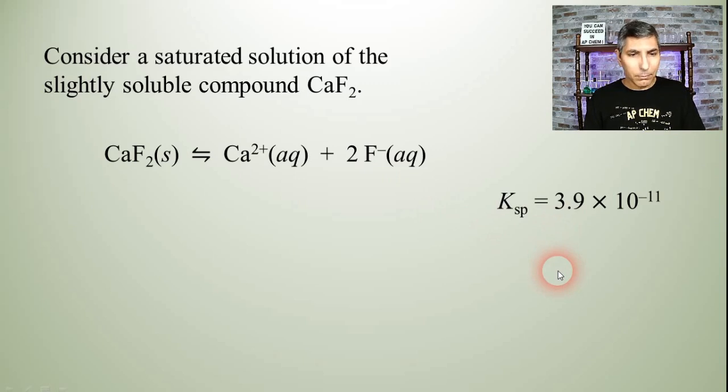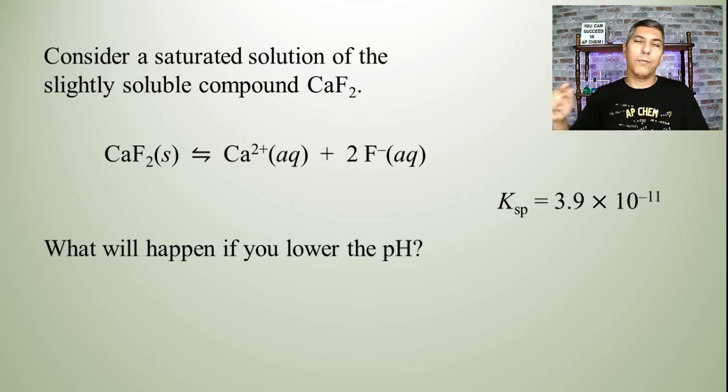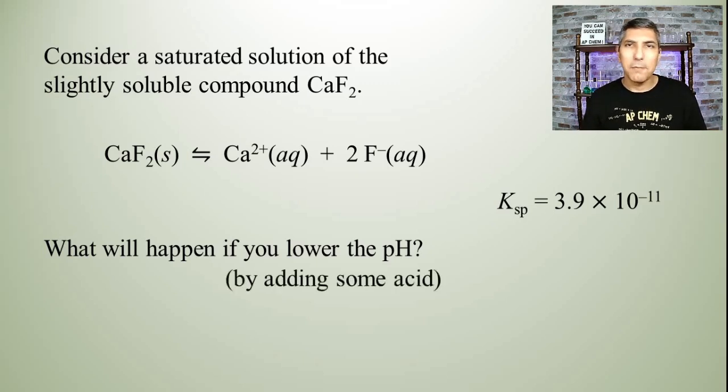Now, this time, we're going to take a saturated solution of this calcium fluoride. And this time, we're going to lower the pH. Once again, I'm going to ask you the same question. How do we go about doing that? How do we lower the pH of something? Well, to lower the pH, you're probably going to be adding acid. It might be hydrochloric acid. It might be nitric acid, something else. But in some way, we're adding some acid. So, we're adding some hydronium ion to this. Now, if we add hydronium ion to this mix, what's the hydronium going to do? Is there something that this hydronium can react with in this equation?